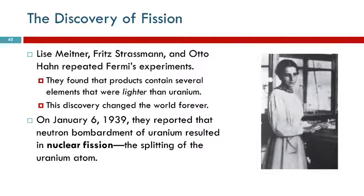Lisa Meitner, Fritz Strassman, and Otto Hahn repeated Fermi's experiments. And they found that the products that were formed by that process were actually lighter than uranium. He didn't make a heavier element. They were actually lighter. And this was a discovery that changed the world.